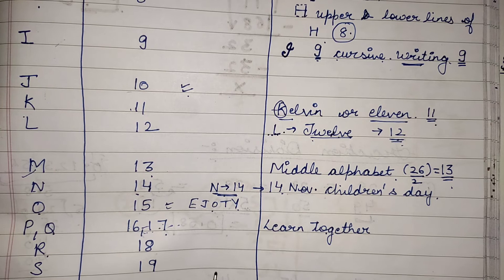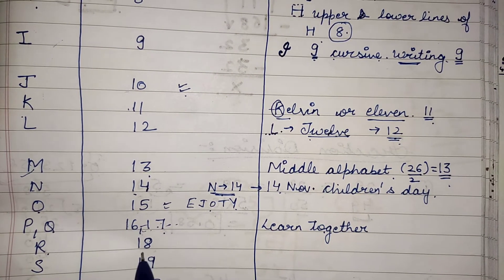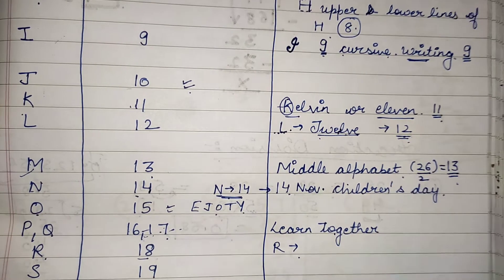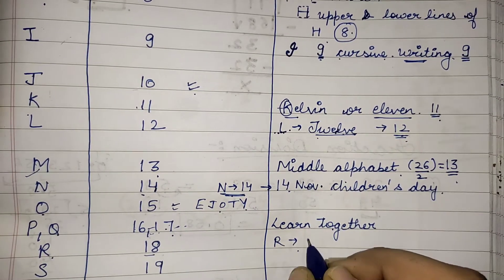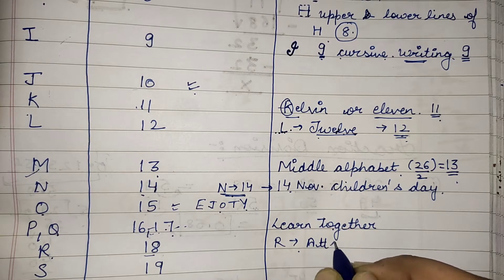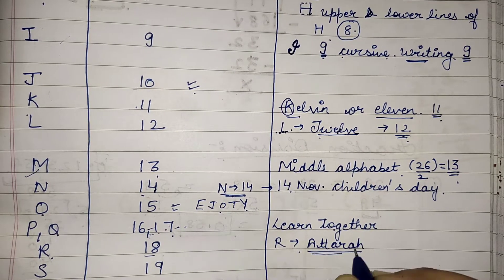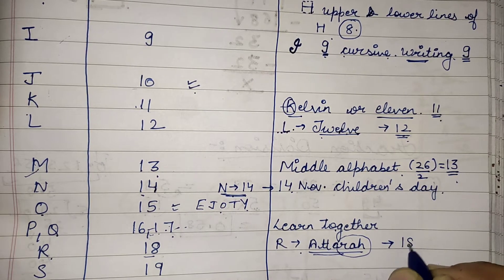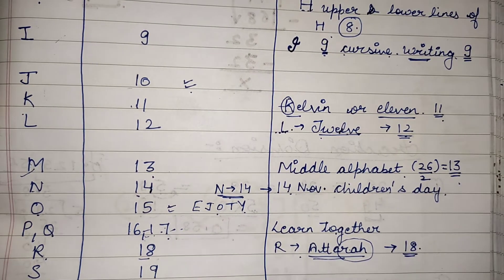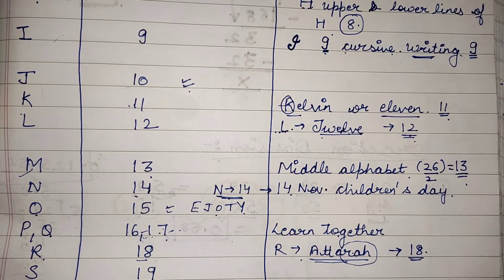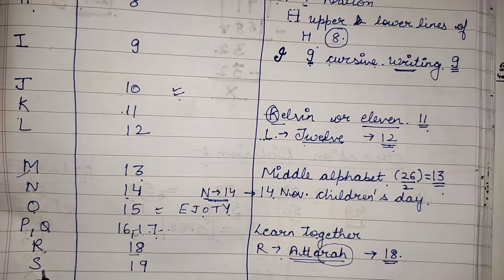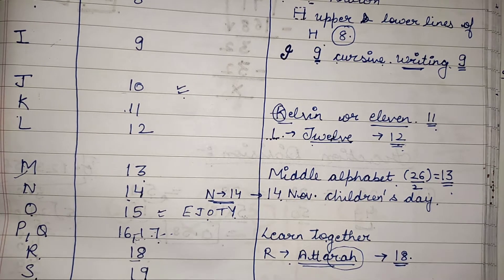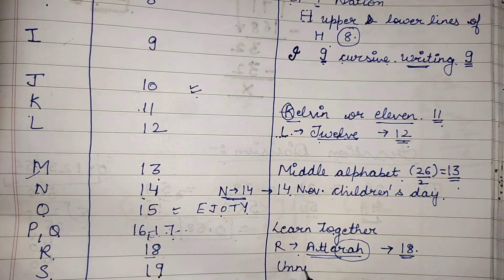Next is R. As we learned L as twelve, for R we use the Hindi word 'athara'. The sound of R comes at the last of 'athara', so that means R is present at the eighteenth position.